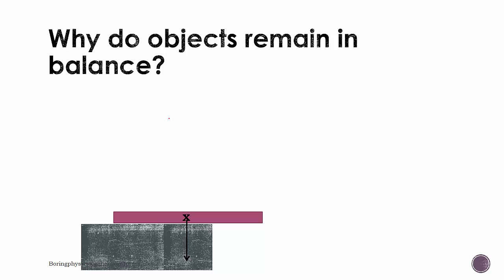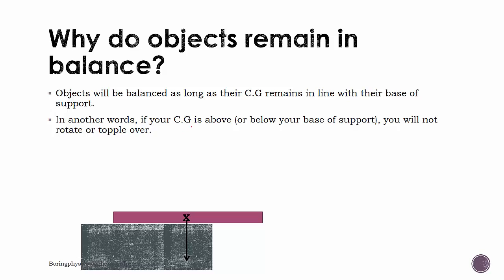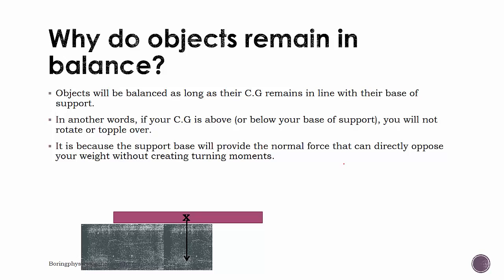Why do objects remain balanced? An object will remain balanced as long as its center of gravity remains in line with its base of support. If the center of gravity is above the base of support, the object will not rotate or topple over. This is because the base provides a normal force that directly opposes the weight without creating any turning moment.